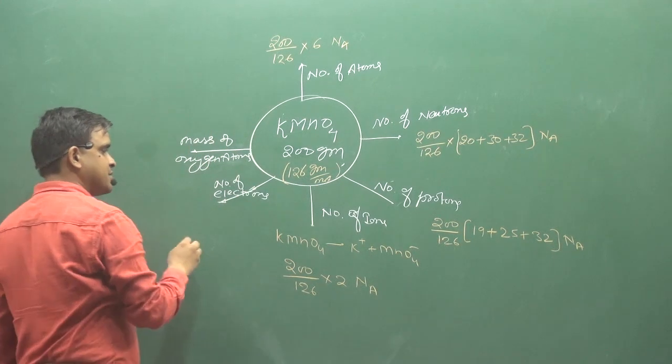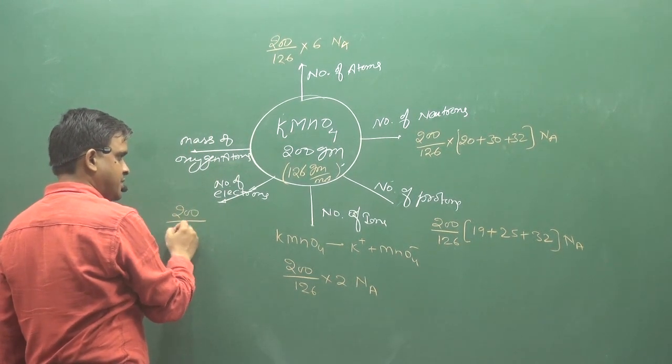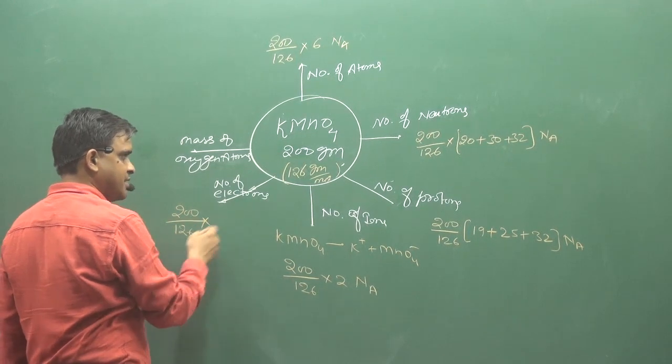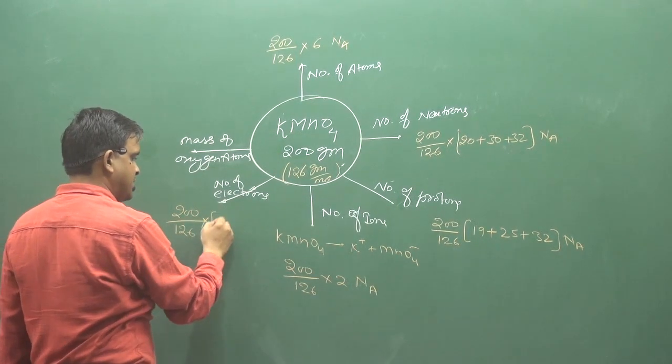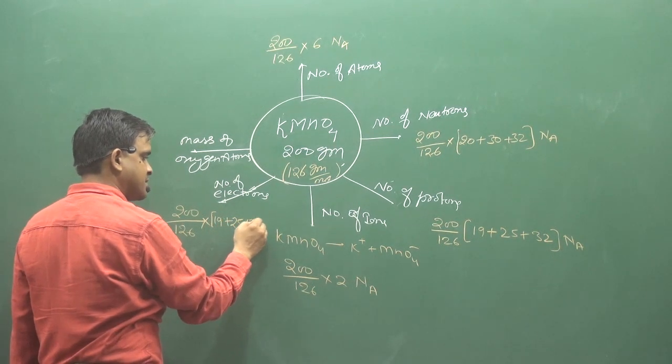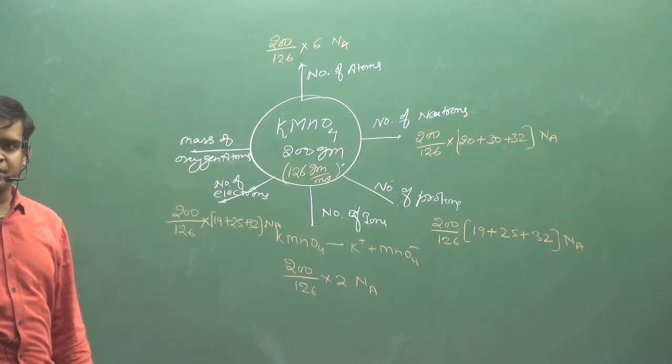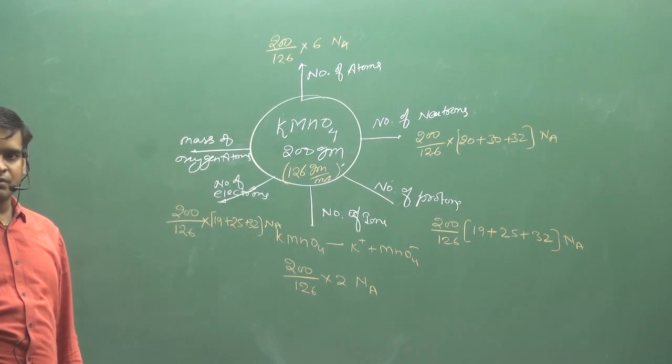Here, number of electrons. If we say that the amount of protons will be as much electrons because there is no charge. So the proton section is 19 plus 25 plus 32 Na. We don't have to say valence electrons. Then we have to start a little brain.